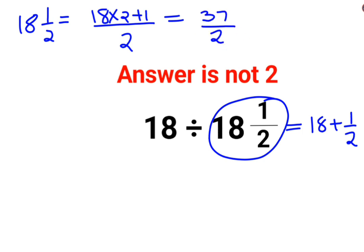So here we have 18 divided by 37 by 2. Now here we have to realize that whenever you have division, especially if it involves fraction, you have to follow the rule of KCF,